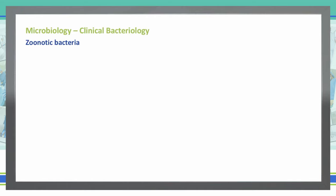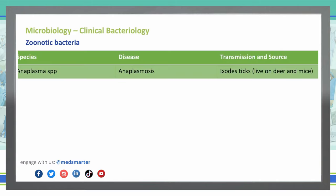First and foremost, what is a zoonotic infection or zoonotic bacteria? These are infections that can be transmitted from animals to humans. The first one is Anaplasma species. It causes anaplasmosis — a very simple name associated with the species. The transmission source is the Ixodes tick, which comes off of deer and mice. The tick bites the deer and mice, becomes infected, then bites a human and transmits the Anaplasma bacteria.